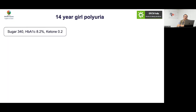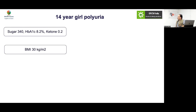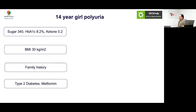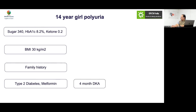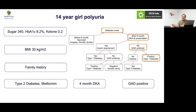Case 8: A 14-year-old girl with polyuria, sugar 340, HbA1c elevated, non-ketotic, slightly obese, positive family history, labelled type 2 and started on metformin. Do you agree? No — you must do a GAD antibody here; otherwise she will develop DKA. The key message: do not label anyone as type 2 unless you have excluded autoimmunity.